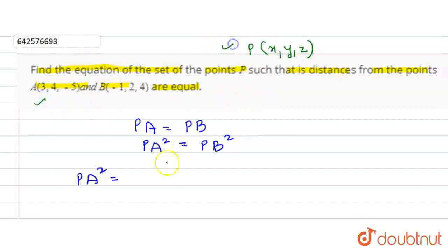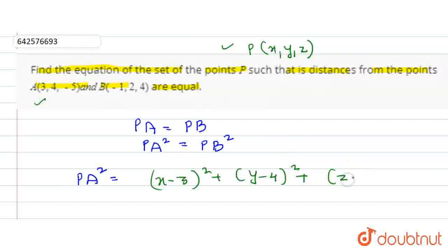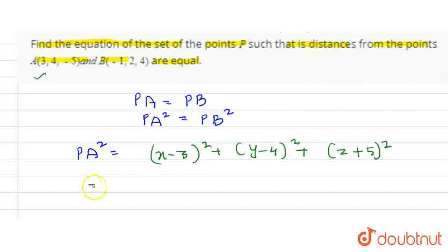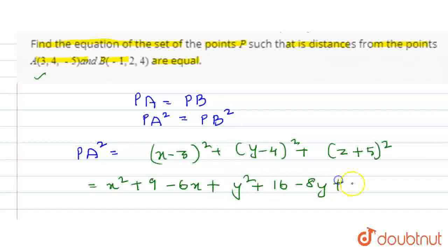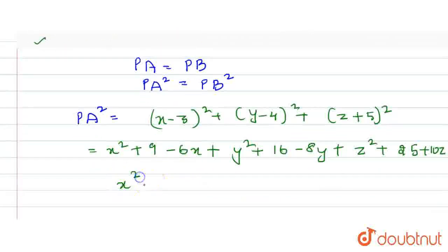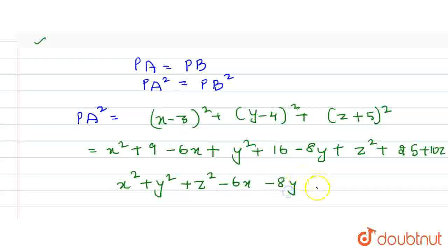Applying the distance formula on P and A, PA squared equals (X minus 3) whole square plus (Y minus 4) whole square plus (Z minus 5) whole square. Expanding: X squared plus 9 minus 6X plus Y squared plus 16 minus 8Y plus Z squared plus 25 plus 10Z. Combining like terms: X squared plus Y squared plus Z squared minus 6X minus 8Y plus 10Z plus 50. This is the value of PA squared.